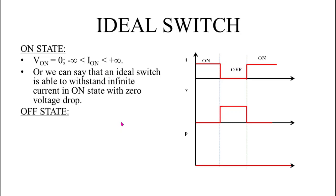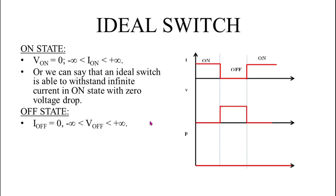During the off state, the switch disconnects the conducting path in the electrical circuit. The current through the ideal switch during off state is zero, that is I_off equals zero. The voltage drop in off state has limits from minus infinity to plus infinity, meaning the ideal switch in off state is able to withstand infinite voltage with zero current flowing through it.